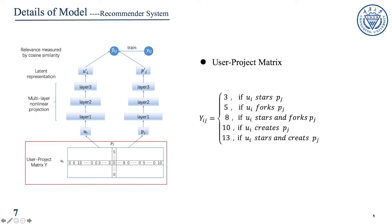In the recommender system part, first we assign different scores to user behavior and generate the user-project matrix Y, shown in the red box. According to this formula, users' behaviors on GitHub often include create, fork, and star. Different behaviors represent different levels of interest in projects, and we score behaviors according to their level of interest.